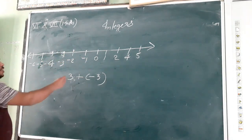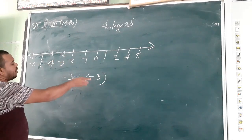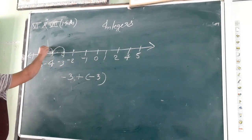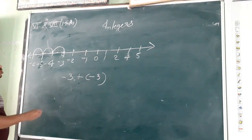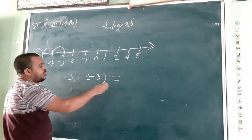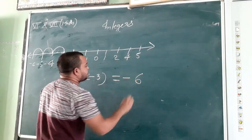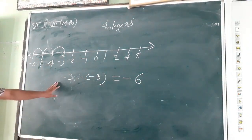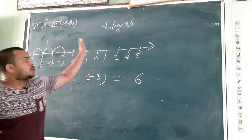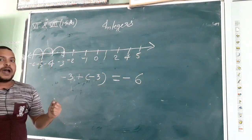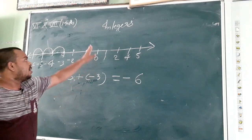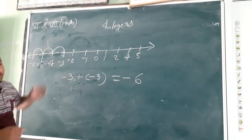For example, if we have to add minus 3. We move 3 steps towards the left: 1, 2 and 3. So minus 3 plus minus 3 is equal to minus 6. So if we have to add a negative number on a number line, we will move towards the left.